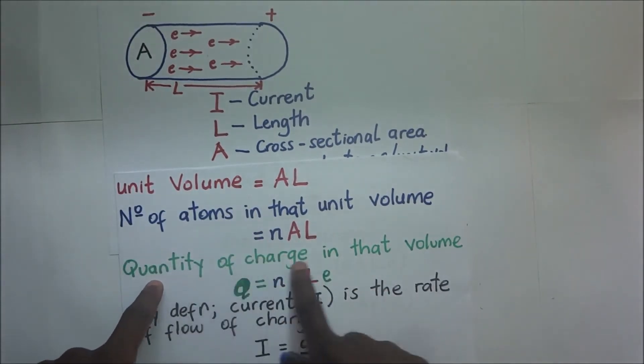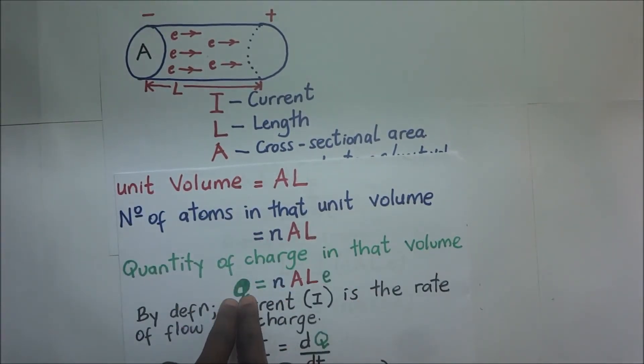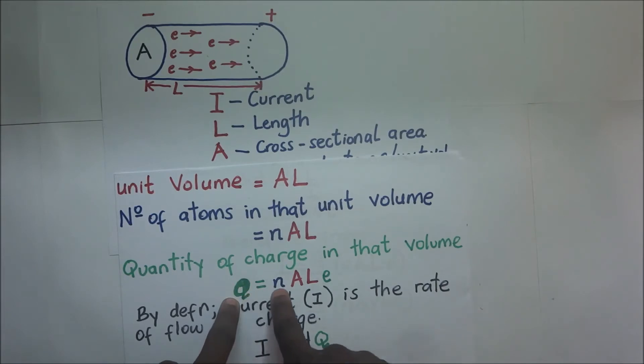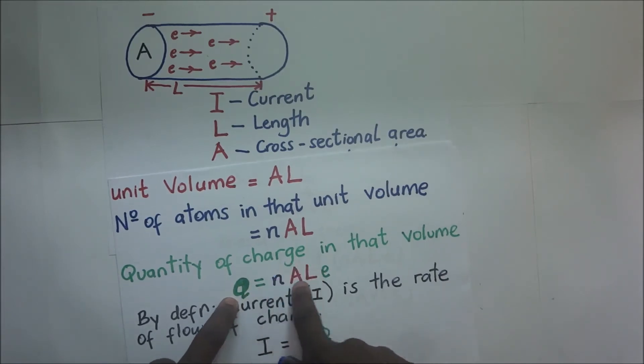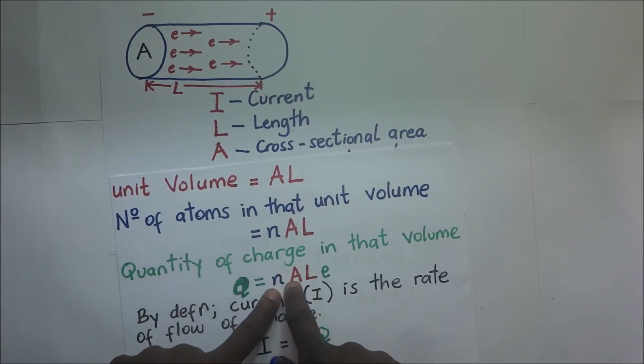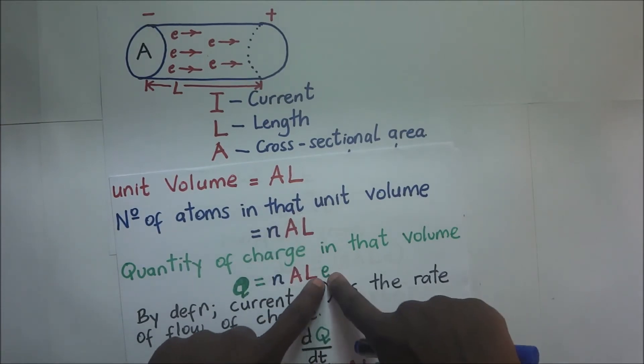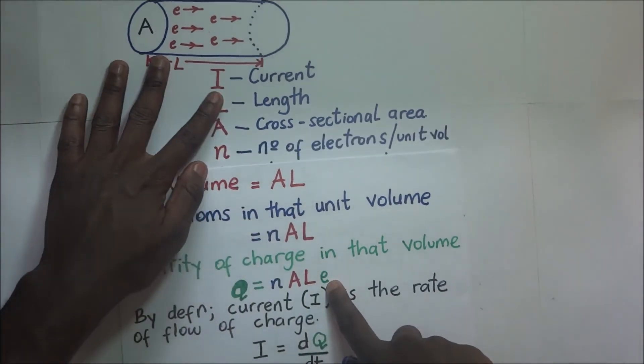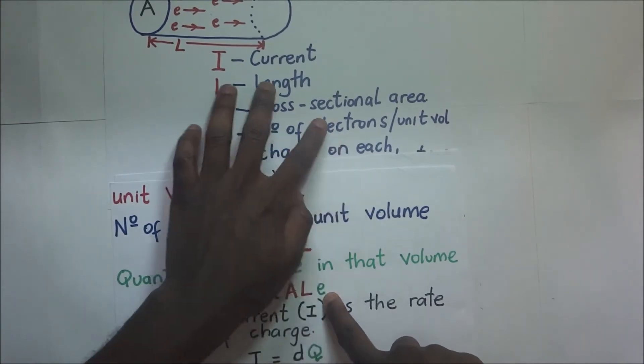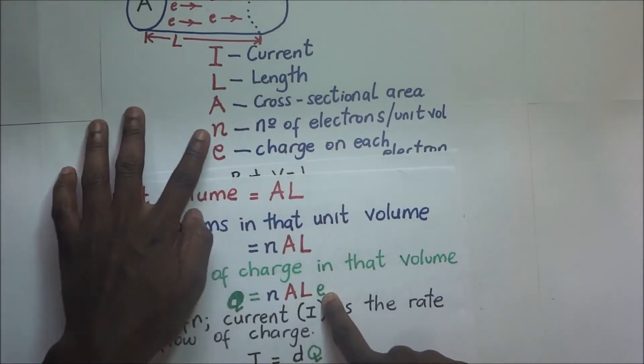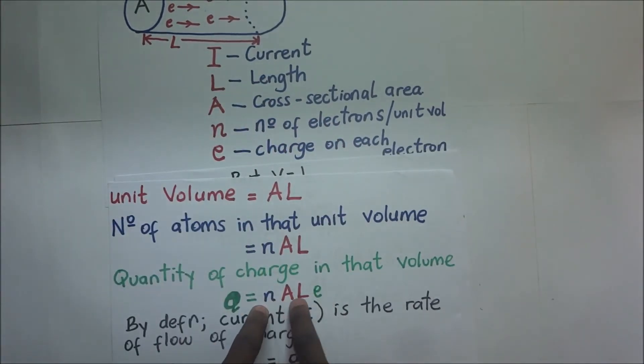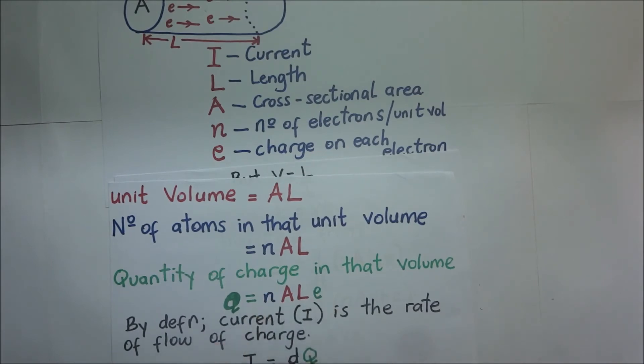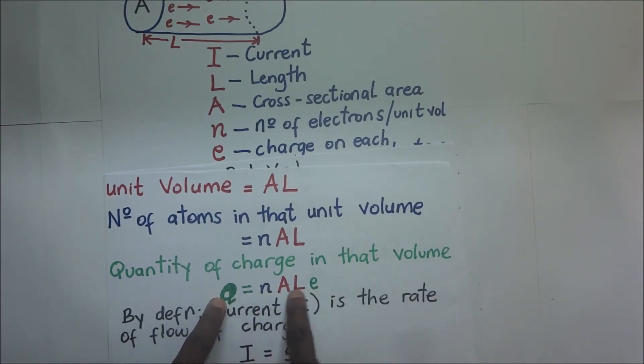So now that we know the number of atoms in this unit volume, then we'll go ahead and find the charge, the total charge in this unit volume. The total charge or the quantity of charge in that unit volume, which we shall denote by Q, is going to be N times AL. This is the number of atoms times E to get the total charge.